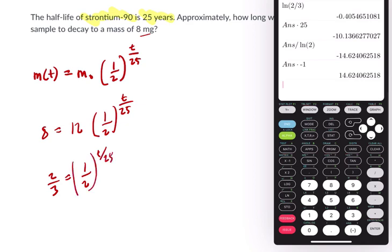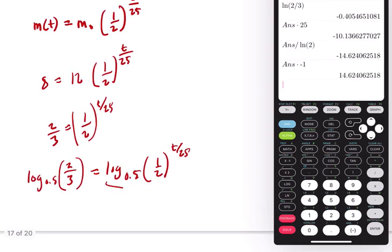So here we can take the logarithm of both sides to solve this. I'll use a logarithm with a base of 0.5. So log base 0.5 of two-thirds equals the log base 0.5 of one-half to the t over 25.